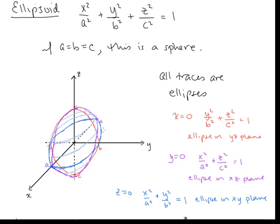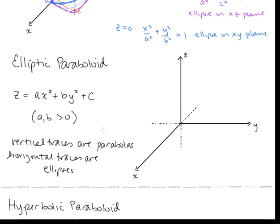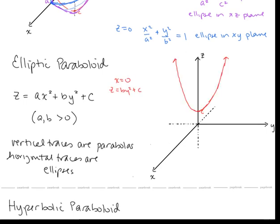Now let's take a look at the elliptic paraboloid. The equation is of the form z equals ax² plus by² plus c. Starting with x equals 0, we get z equals by² plus c. With b positive and a positive value of c, this lifts up by c units, giving us a parabola in the yz plane. Now with y equals 0, we get z equals ax² plus c — again, a positive and c positive — giving us a parabola in the xz plane.